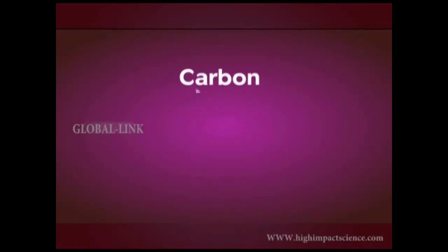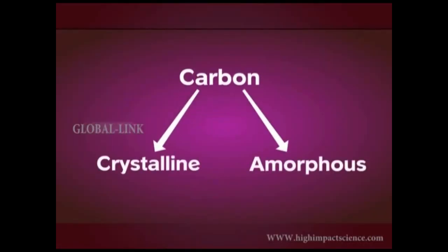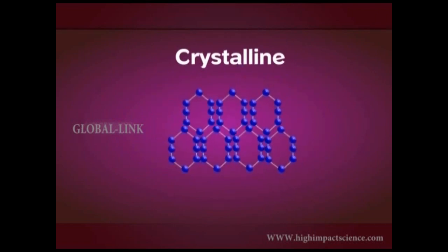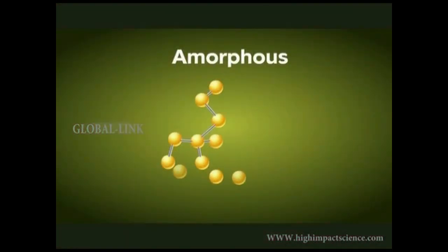Carbon exists in two forms: crystalline and amorphous. In crystalline solids, the constituent particles are arranged in a definite order. But in amorphous solids, the particles have no definite order of arrangement.